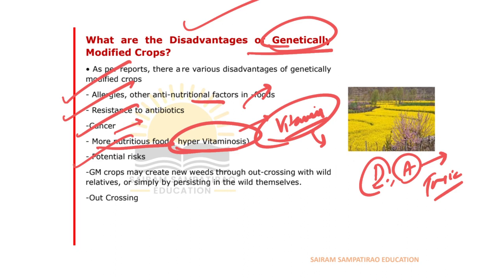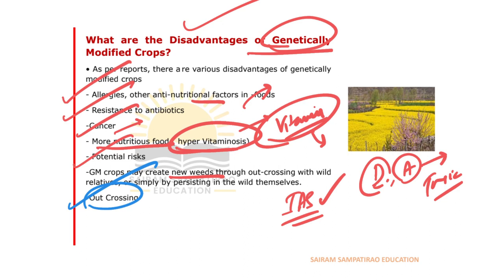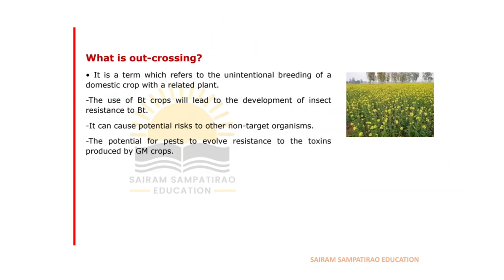GM crops can also create new weeds and invasive alien species. Another major problem is outcrossing. These are various disadvantages of genetically modified crops. Outcrossing means the unintentional breeding of a domestic crop with a related plant — breeding that was not intended but happens unknowingly.